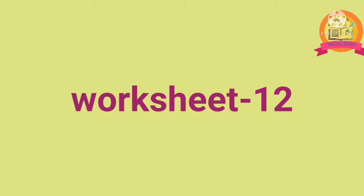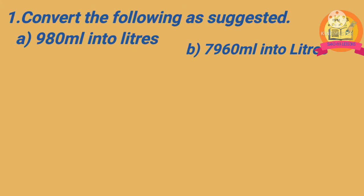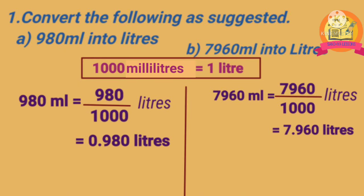Worksheet 12. First problem: convert the following as suggested. Problem A: 980 mL into liters. As 1000 mL is equal to 1 litre, by dividing 980 by 1000, we get 0.980 liters. That is, 980 milliliters is equal to 0.980 liters. Problem B: 7960 milliliters into liters. By dividing 7960 by 1000, we get 7.960 liters. That is, 7960 milliliters is equal to 7.960 liters.